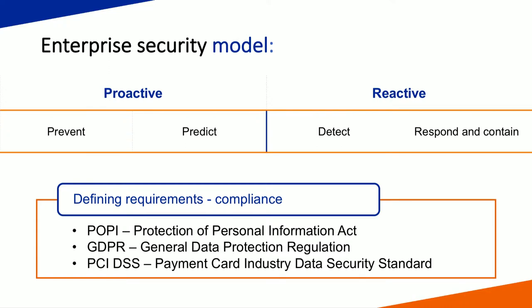At the bank, we have an enterprise security model. It focuses on two concepts: proactive versus reactive. Proactive has two sub-themes. The first is to prevent — you want to stop people from even breaching your cluster, your environment, your bank. The next is to predict. In order to stay up to date with the latest threats, you have to predict where and when they will hit. This is becoming more of a theme because attacks happen rapidly and extensively.